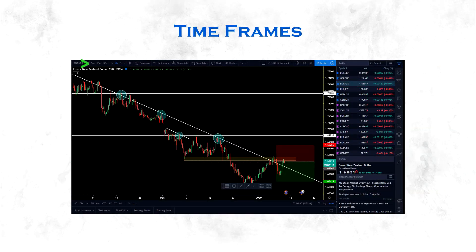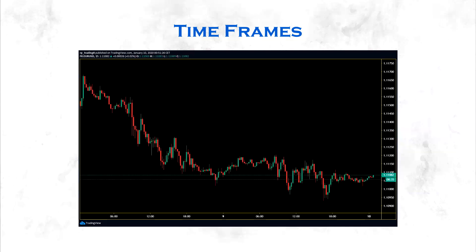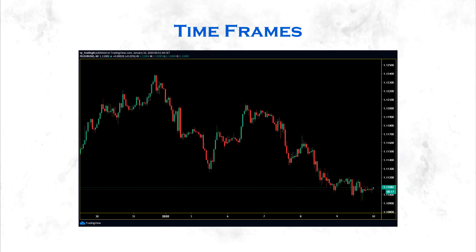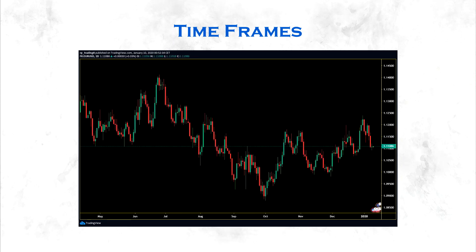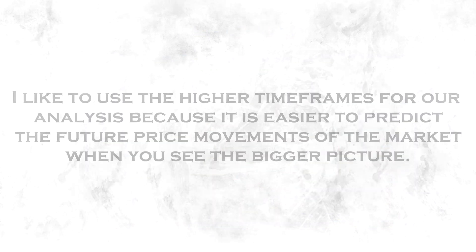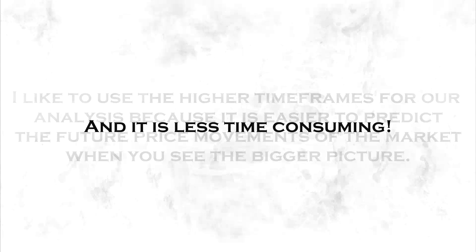Next thing I want to talk about is time frames. The time frames are on the top left corner in TradingView — that's what I use for my analysis. You can choose between all sorts of charts from one minute per candle to one day, one week, or one month per candle. Whatever time frame you choose, it will represent the price data within that period on each candle. If you pick the 5M chart, it would be 5 minutes worth of price data on each candle. If you pick the 15M chart, it would be 15 minutes worth of price data on each candle. The 1 hour chart gives 60 minutes of price action per candle, the 4 hour chart 240 minutes, and the daily or D1 chart represents a whole day worth of price movement per candle. I like to use the higher time frames for analysis because it is easier to predict future price movements when you see the bigger picture, and it is less time consuming.